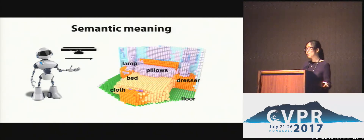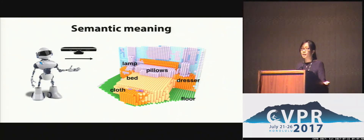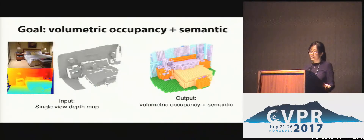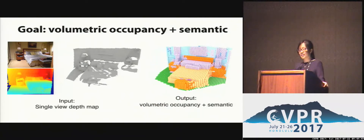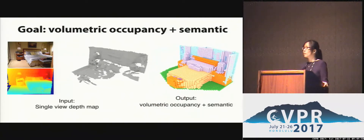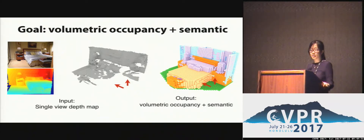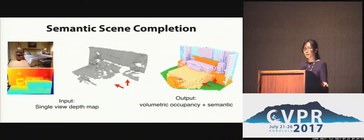At the same time, it is also important to understand the semantics of the environment, because only with that information is the robot able to put your clothes back in your dresser but not the trash can. So motivated by scenarios like this, the goal of our work is to simultaneously predict voxel occupancy and semantic labels from a single depth image. We call this task semantic scene completion.